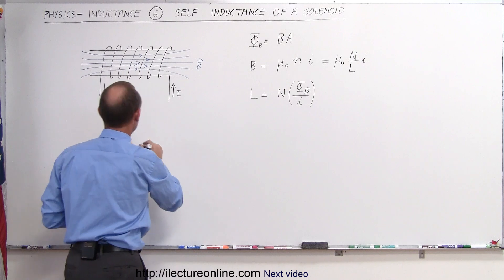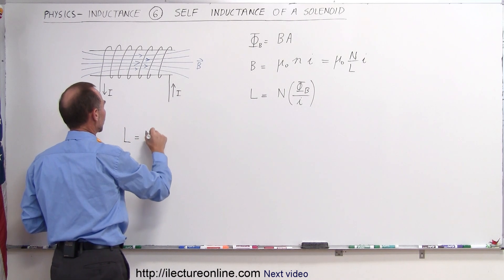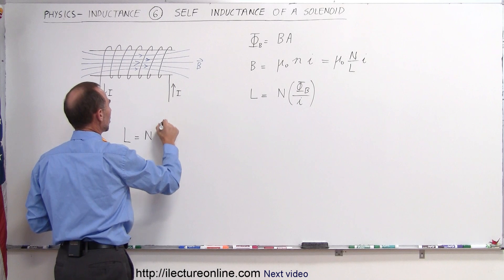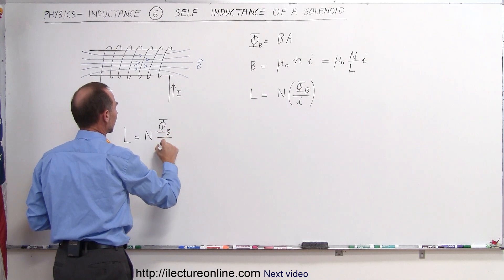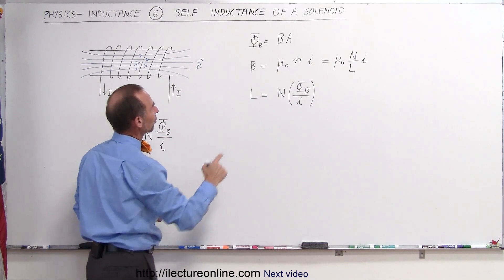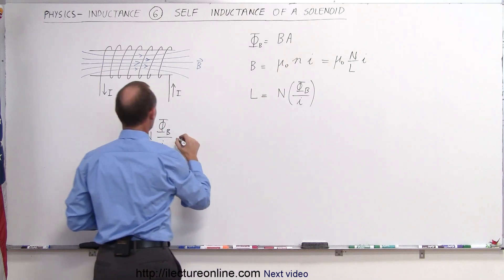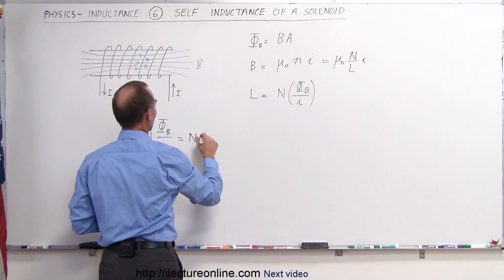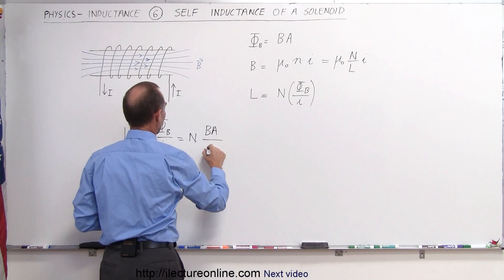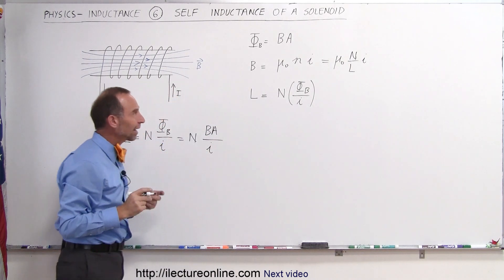So here we can say that the self-inductance is equal to the number of loops times the change in the flux, the magnetic flux divided by the current. And then, of course, the flux is B times A, so this can now be written as the number of loops, times B times A divided by the current. And finally,